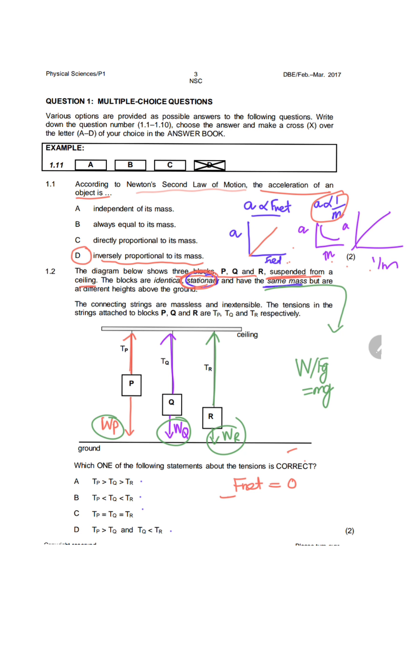That means that the tension plus the weight is equal to zero. So, tension equals negative W. The magnitude of the tension and the weight is the same. If all three objects have the same weight, then they all have the same tension. That would give us an answer of C. Tension in P is equal to tension in Q, which is equal to tension in R.